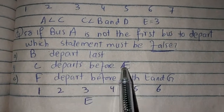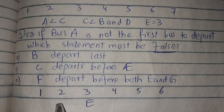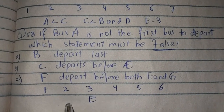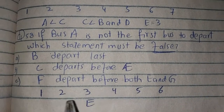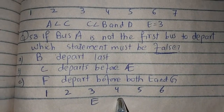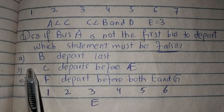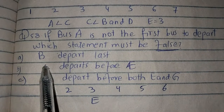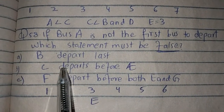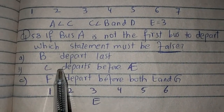C departs before E: agar yahan pe hum C rakhein, to yahan pe hum A nahi rakh sakte — A yahan pe aa jayega, jo hamari first statement ke against hai, A less than C ke. To yeh jo hamare paas option B hai, yeh is ka right answer hai. Yeh jo statement hai yeh false hai — C kabhi bhi E se pehle nahi ja sakta. Option B is the right answer.